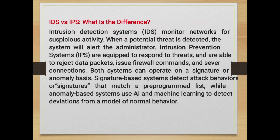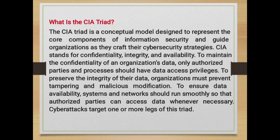Differentiate between IDS and IPS — this is a very important question many interviews will ask. Intrusion Detection System (IDS) monitors networks for suspicious activity; when a potential threat is detected, the system alerts the administrator. Intrusion Prevention System (IPS) is equipped to respond to threats and is able to reject data packets, issue firewall commands, and sever connections. Both systems can operate on a signature or anomaly basis. Signature-based systems detect attack behavior or signatures matching a pre-programmed list, while anomaly-based systems use AI and machine learning to detect deviation from a model of normal behavior.